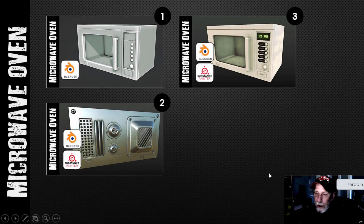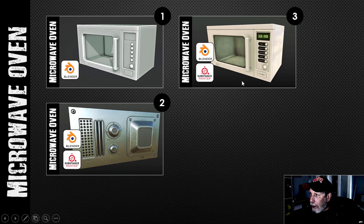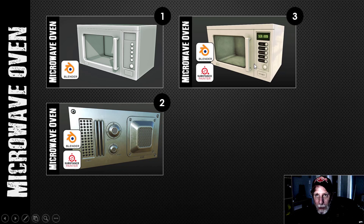This is the final video in the microwave oven series, and it was a pretty short one. In the first video I basically modeled the entire microwave — the body and the back. In the second video I textured the back, and in the third video I textured the body. When I went to put it all together and get the textures out of Substance Painter and into Blender, I ran into trouble.